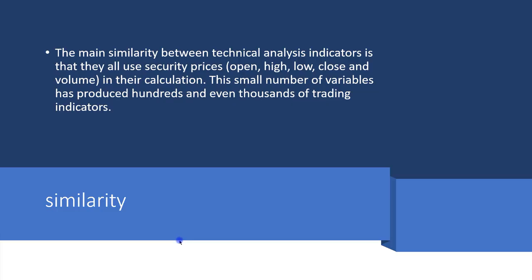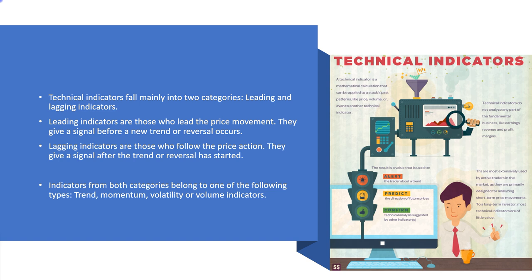The main similarity between technical analysis indicators is they all use securities prices: the open, the high, the low, the close, and volume — that's it. There are all types of mathematical and statistical formulas, but those same basic numbers are the foundation. The euro's open, high, low, and close is not subjective — it's a historical fact. Technical indicators fall mainly into two categories: leading and lagging, which do not have good or bad connotations.